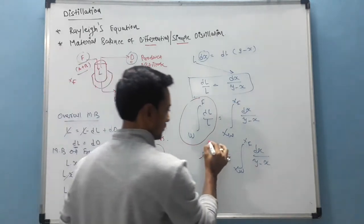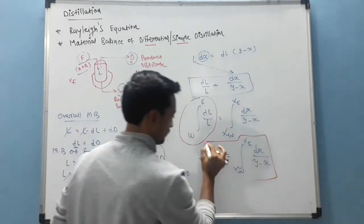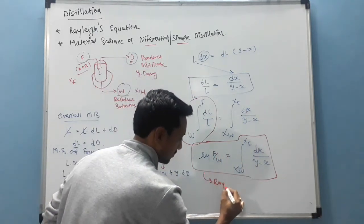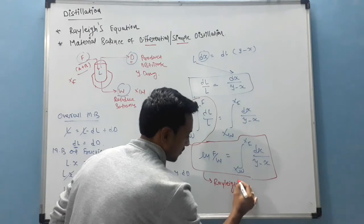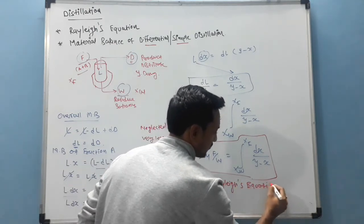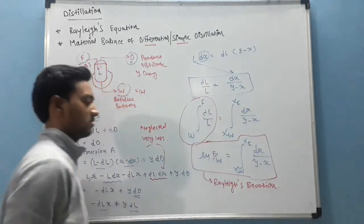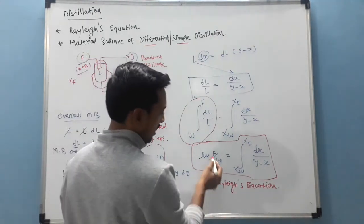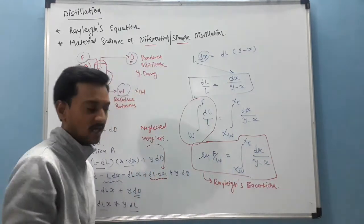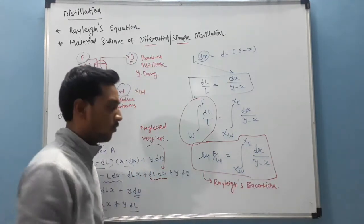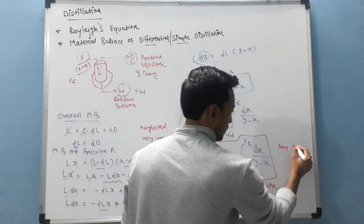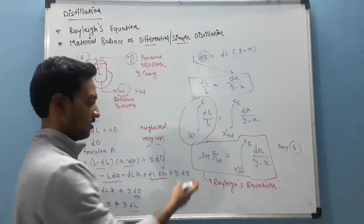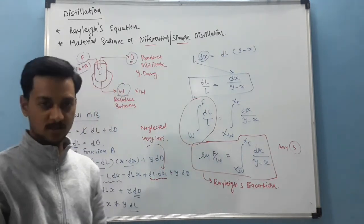So this equation is known as Rayleigh's equation. It's very simple, just material balance of differential or simple distillation. If we know F, W, X and Y, these four quantities, if we know any three, we can calculate the fourth quantity of the equation.